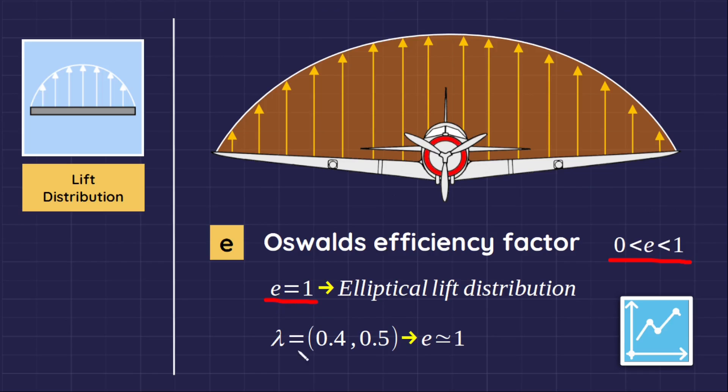As the taper ratio increases from zero in a delta wing platform toward one in a rectangular wing platform, it passes through an early elliptical lift distribution between 0.4 and 0.5.